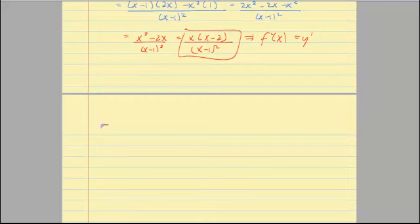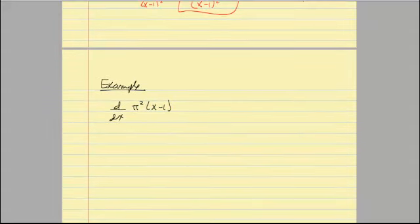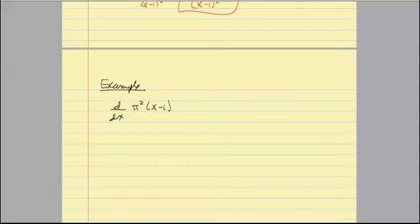Let's look at another example: take the derivative with respect to X of pi squared times the quantity (X minus 1). We need to note a couple of important things. The derivative is with respect to X, so everything else is constant, and of course pi is a constant. I'll just drag that pi squared along. One approach is to distribute: pi squared times X minus pi squared times 1, giving a derivative of pi squared, since the derivative of pi squared is 0.